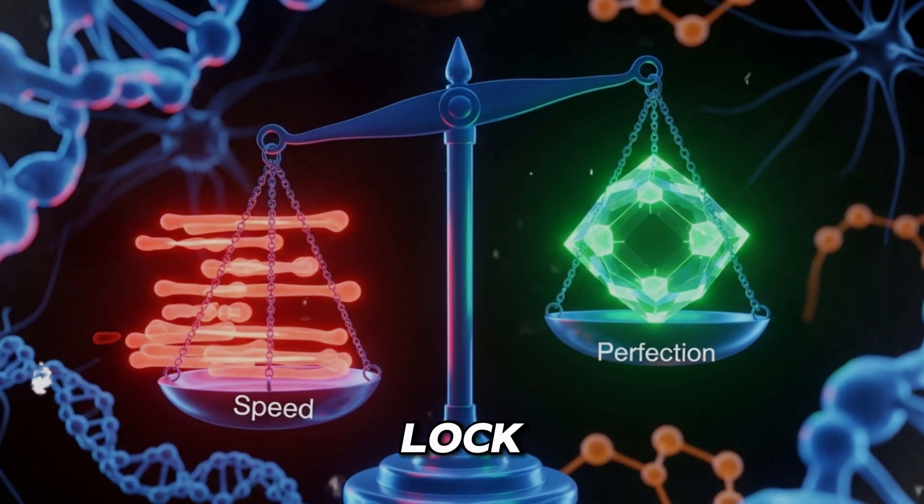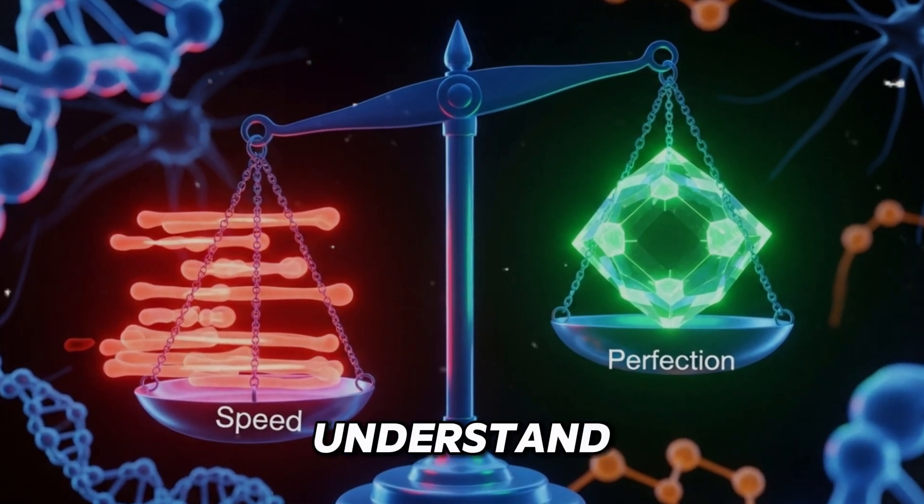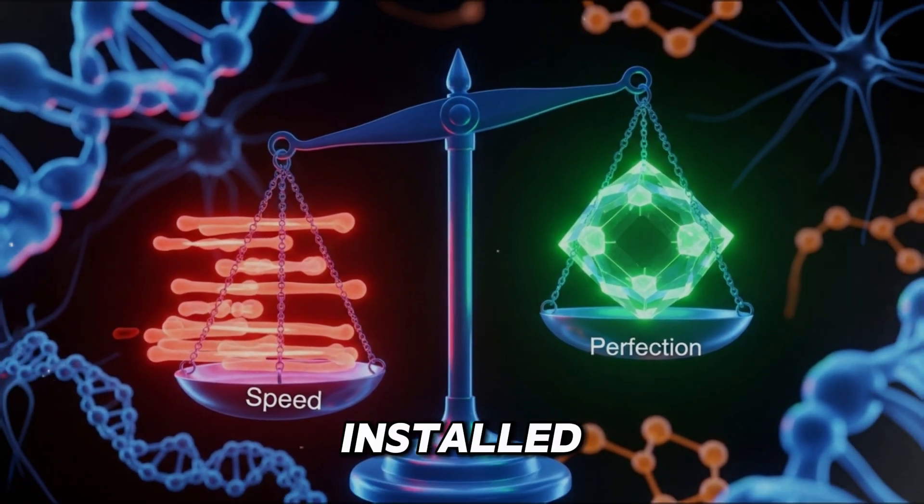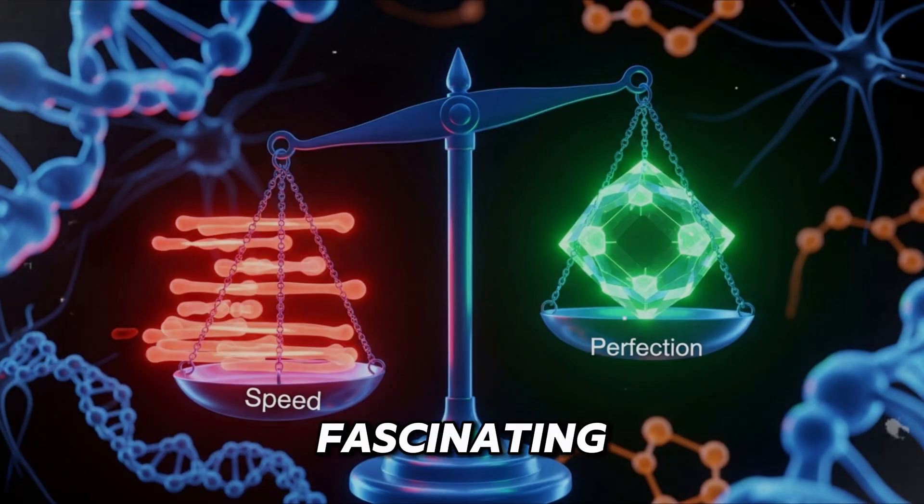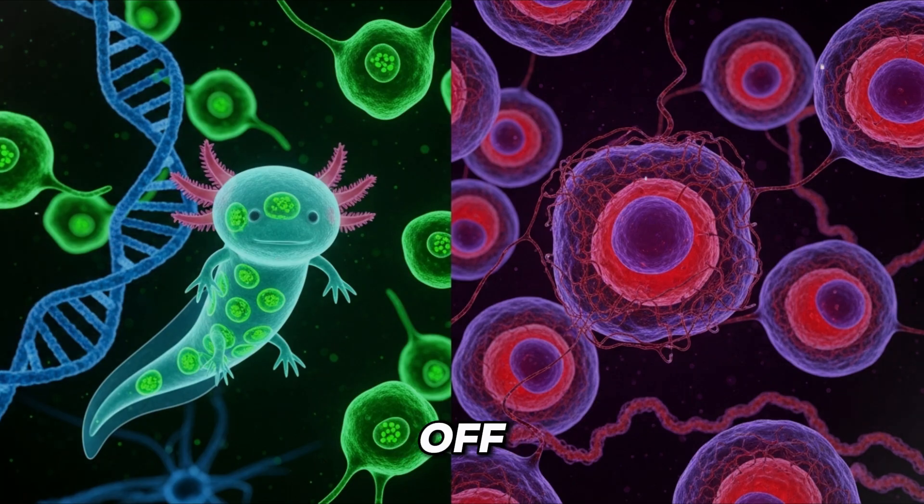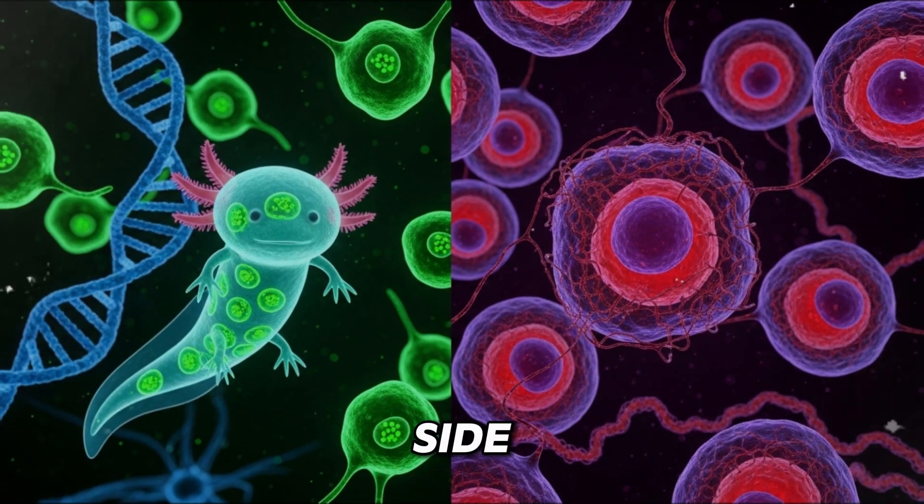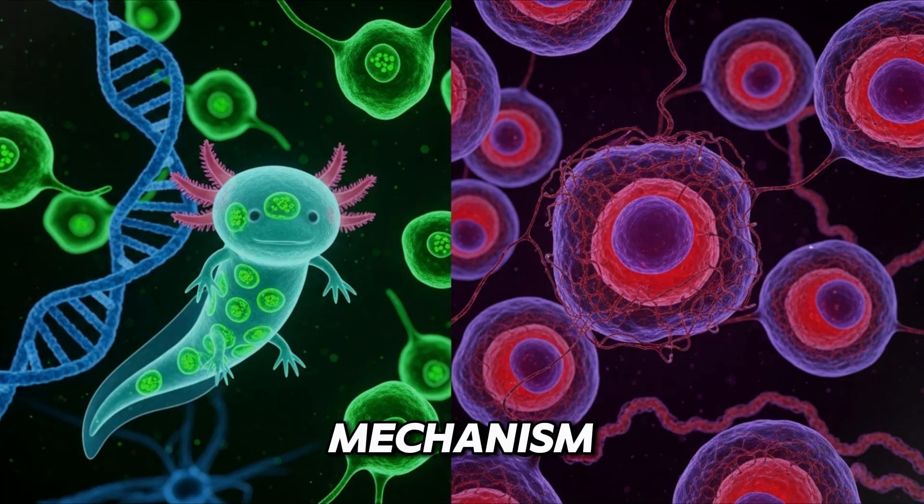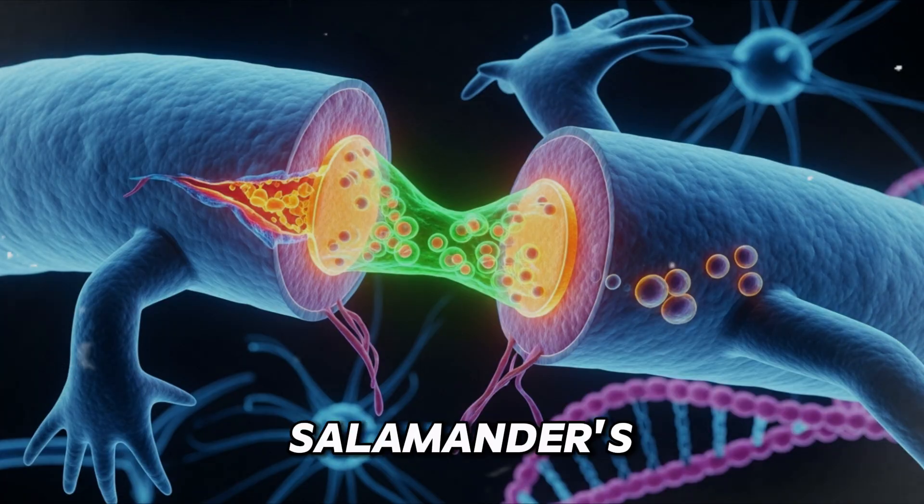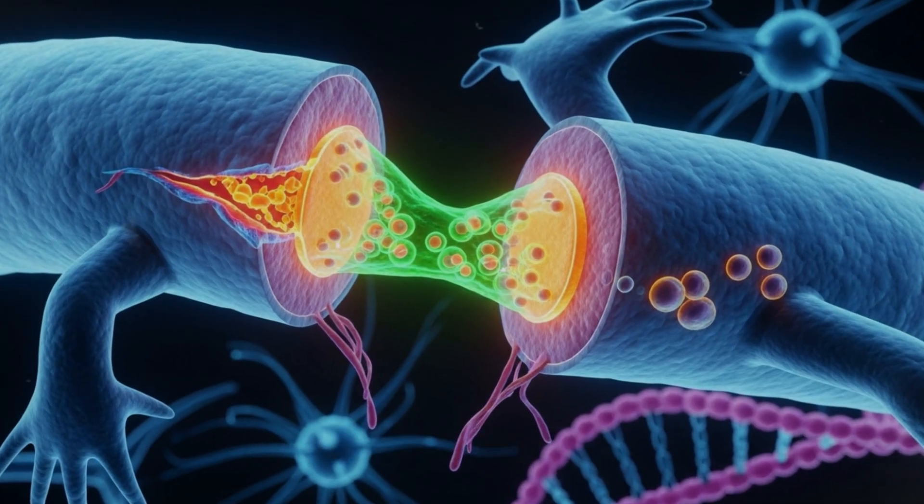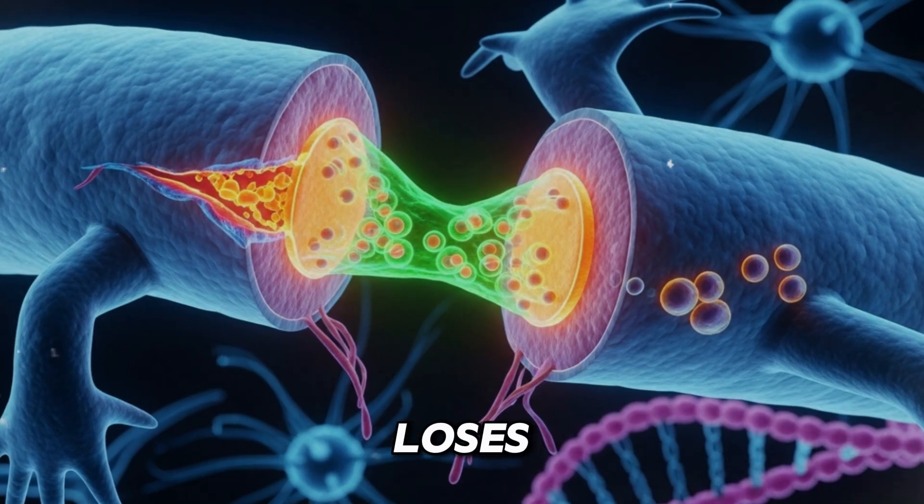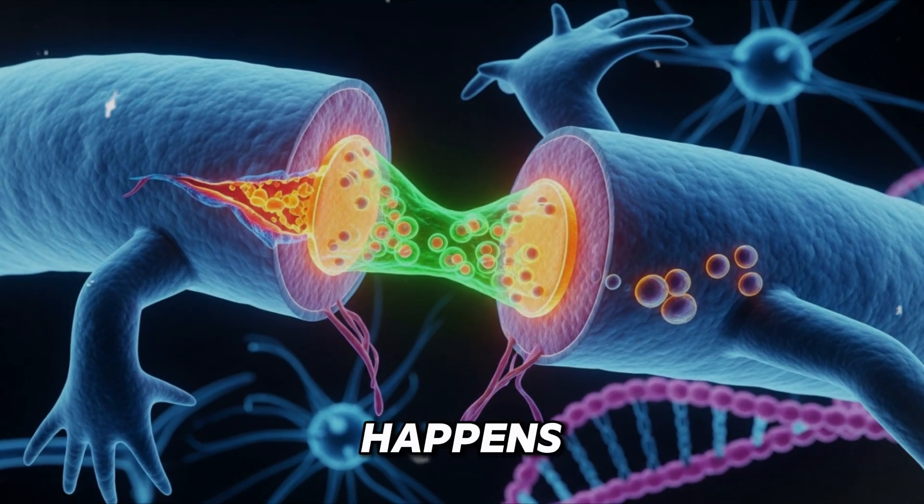To find the lock, we first have to understand why it was installed. The answer is a fascinating evolutionary trade-off: speed versus perfection. Let's look at the two mechanisms side by side. Mechanism one, the salamander's way, perfection. When an axolotl loses a limb, a magical thing happens.